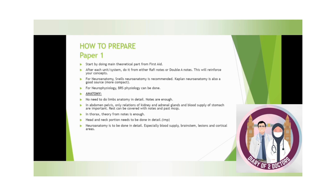Relations of kidney and adrenal, blood supply of stomach — these types of topics are important, and you will get an idea when you do the past paper MCQs. Otherwise, you do not have to do it in detail. Head and neck needs to be done in detail; it is very important for both Paper 1 and Paper 2. Neuroanatomy is to be done in detail, especially blood supply, brain stem lesions, and cortical areas.